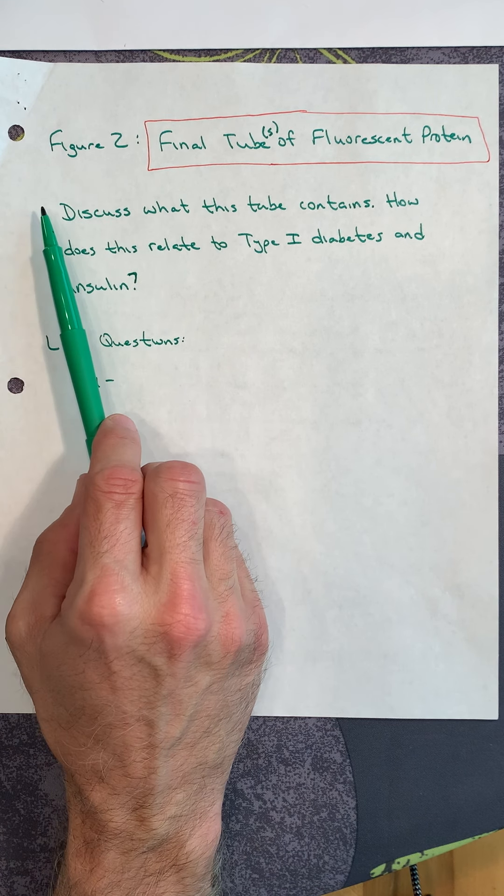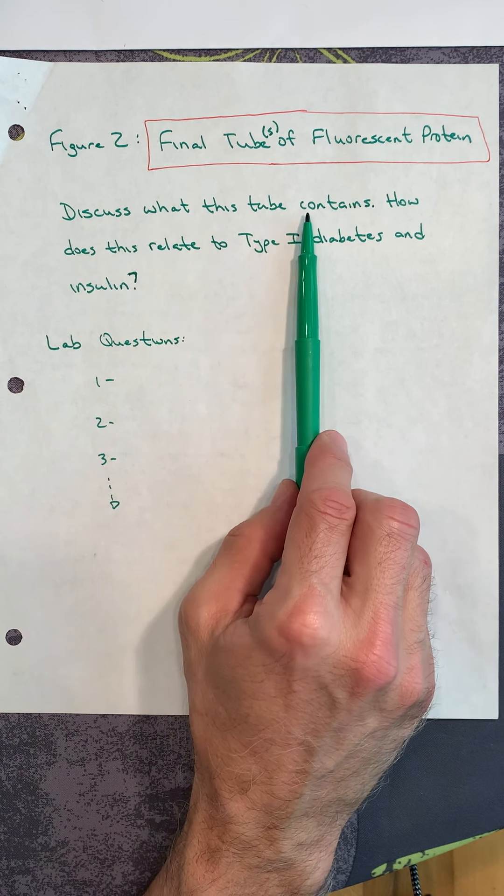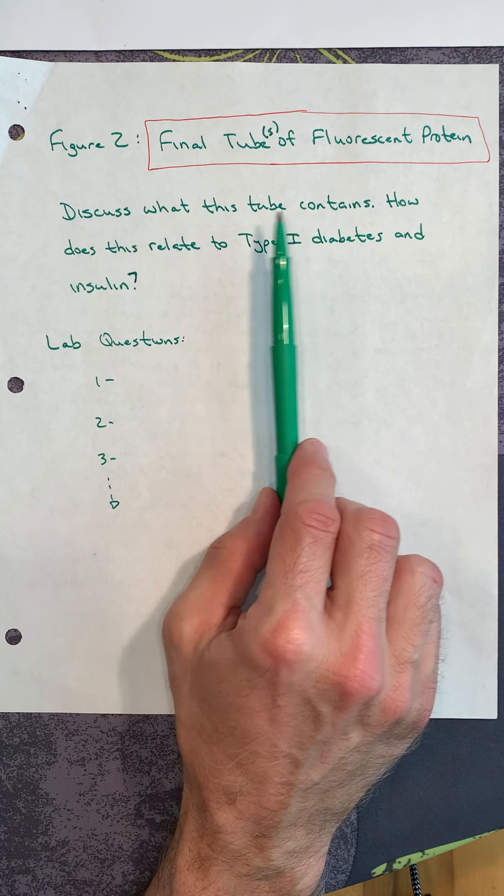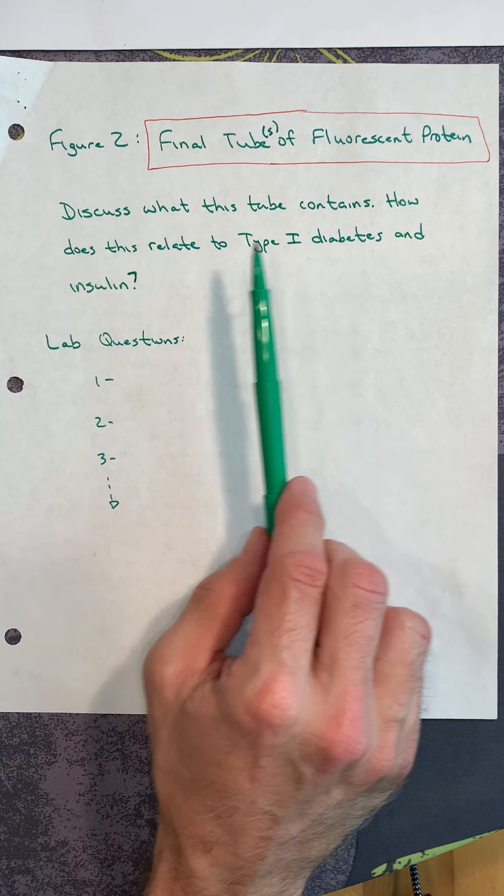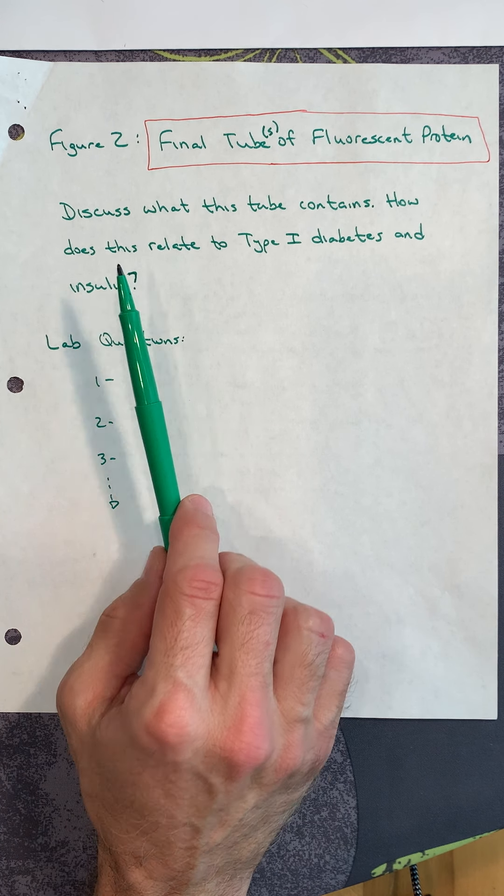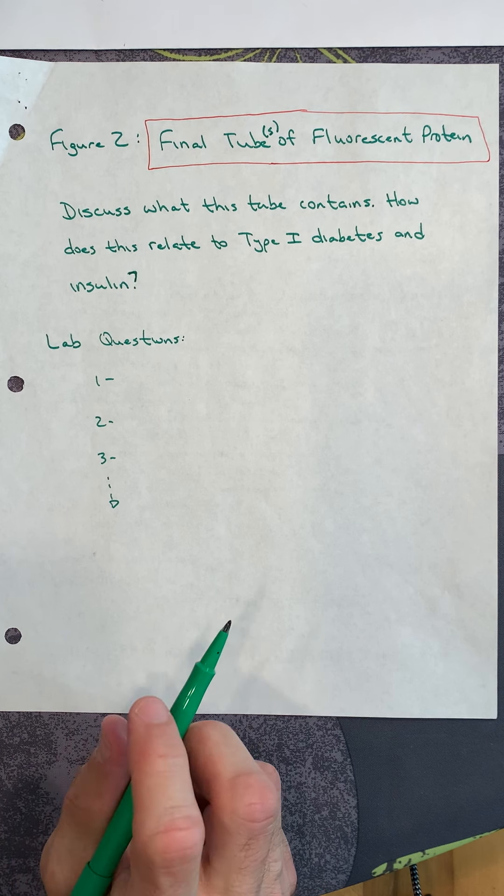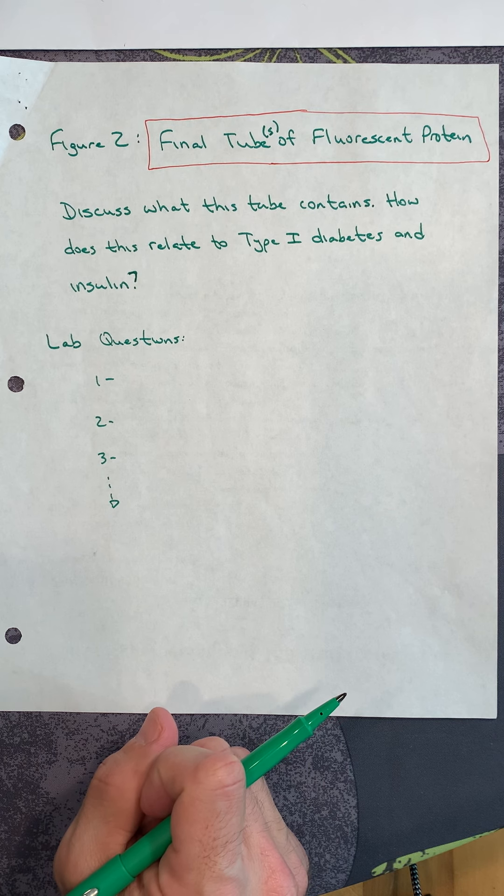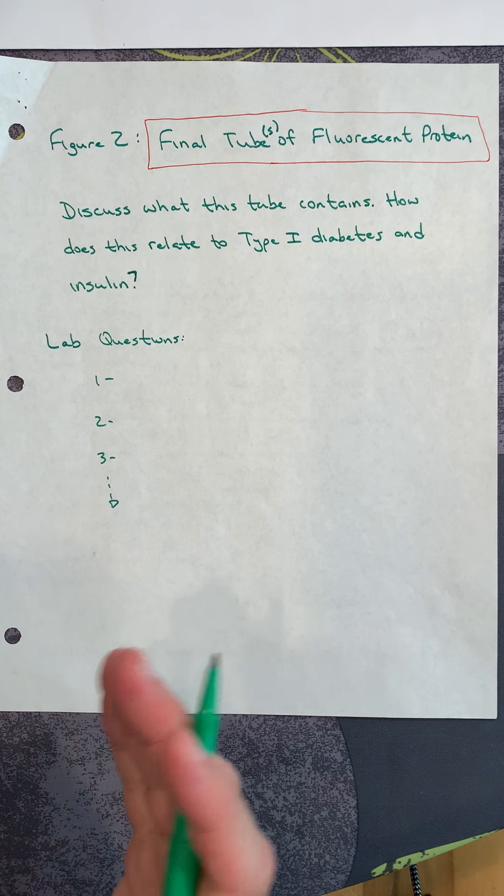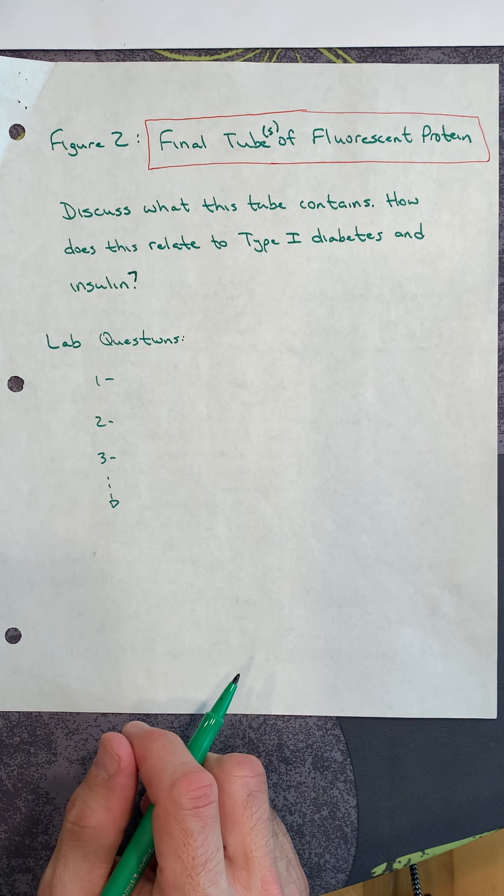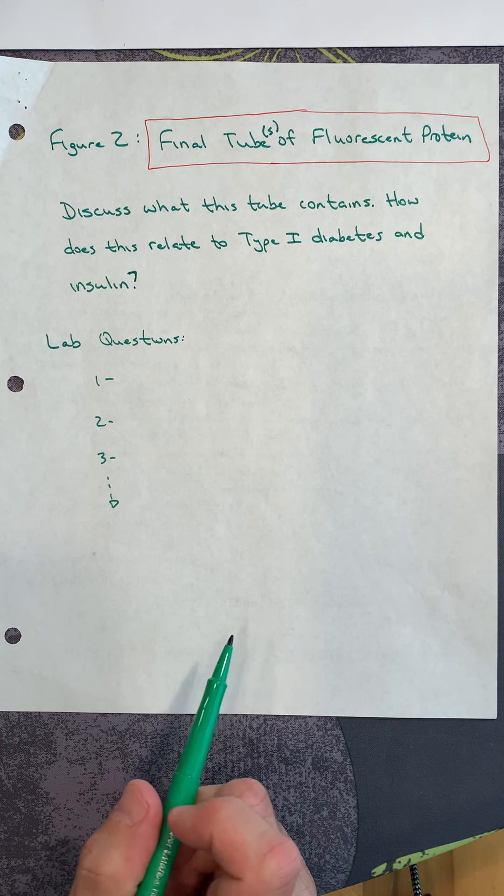Don't forget to make it figure 2. Underneath that figure, discuss what this tube contains. This tube contains fluorescent protein. How does this relate to type 1 diabetes and insulin? We're simulating the same protocol that pharmaceutical companies use. The production of human insulin is an international, multi-billion dollar business. The protocol that you did in class is what pharmaceutical companies do, just on a much larger scale.